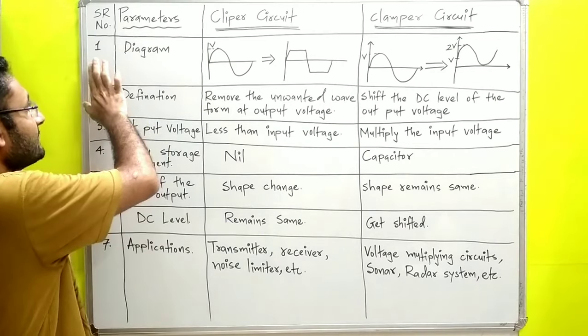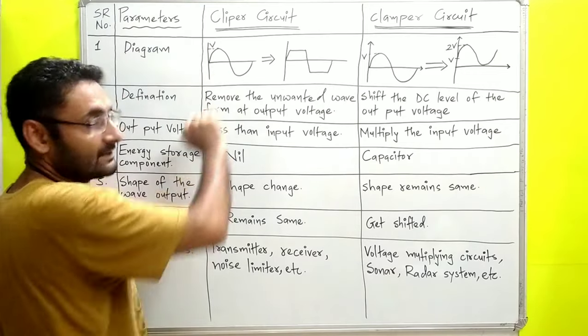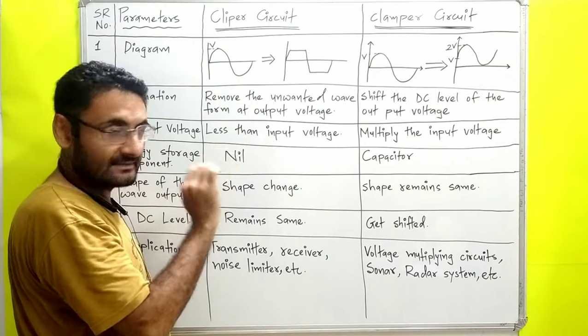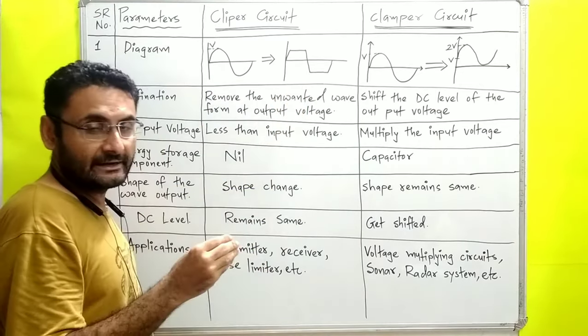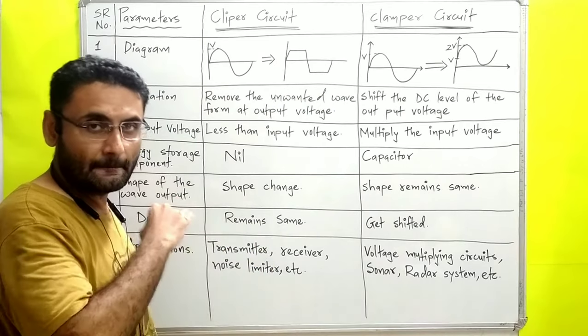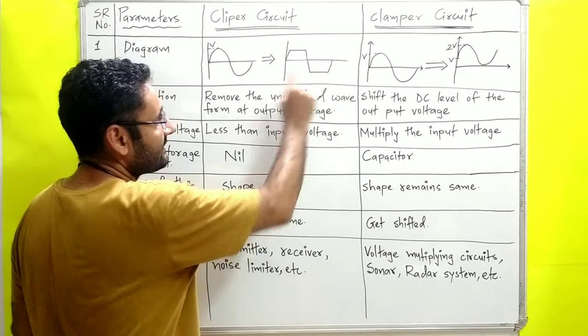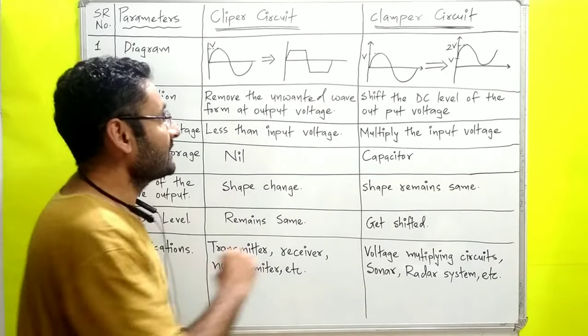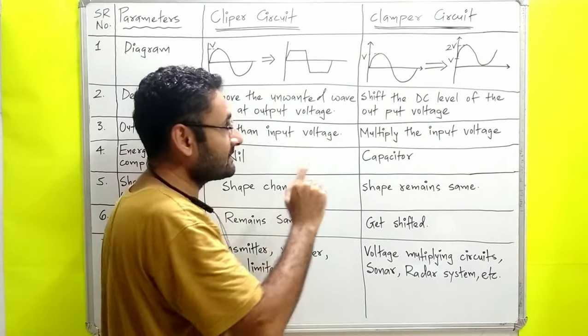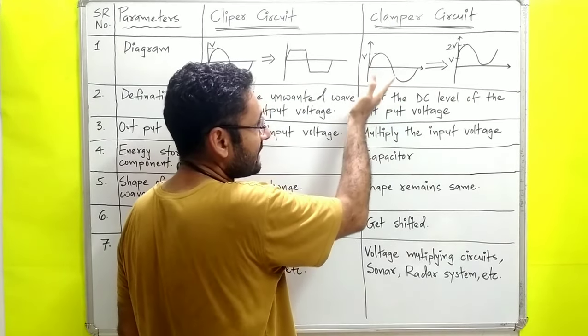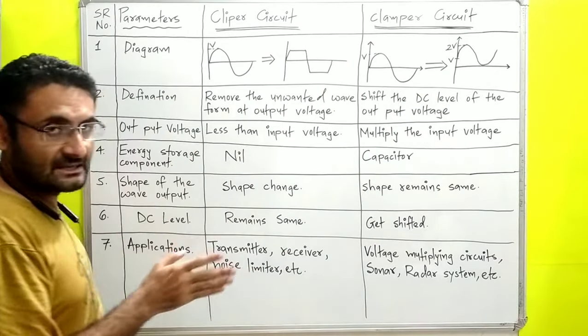The first parameter is the diagram. In the clipper, the AC wave input has unwanted waveform portions that we have to slice, clip, and remove to get the output. In the clamper circuit, we shift the DC level of the waveform. So the DC level has shifted. The first difference is clear.